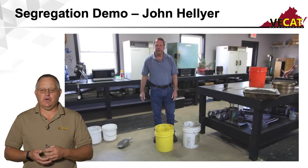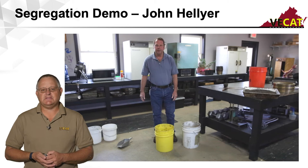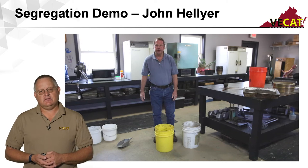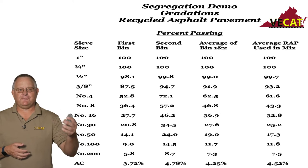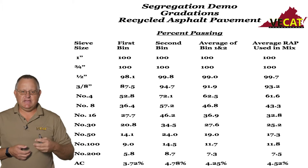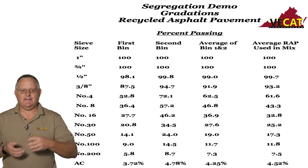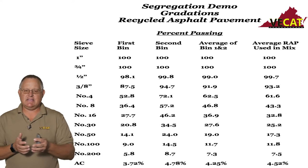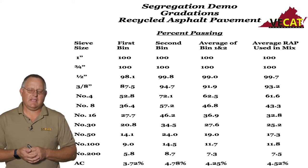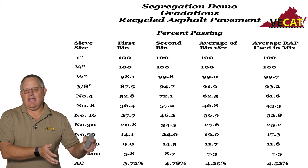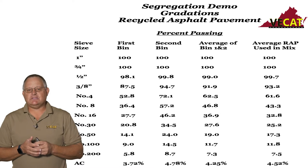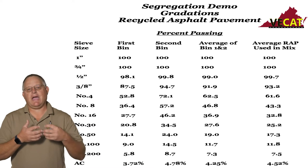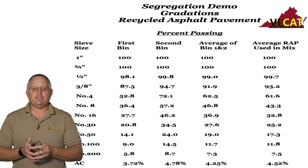As John's video shows, how you handle material can significantly change the properties of the mix. John put together a table showing the impact on results by different sieve size, from different bins to the averages to the average RAP used in the mix. As you go down the sieve sizes, things change dramatically — some material is very fine, some very coarse, and it's the exact same material. That's why it's so important to handle products — whether RAP, aggregate, or anything else — properly so they don't segregate.